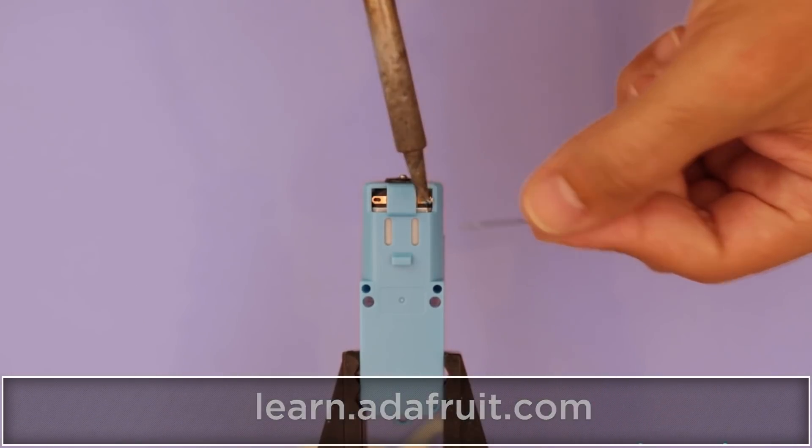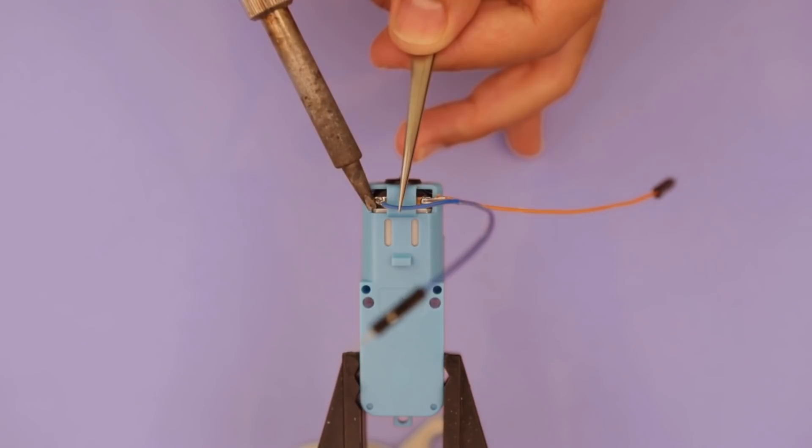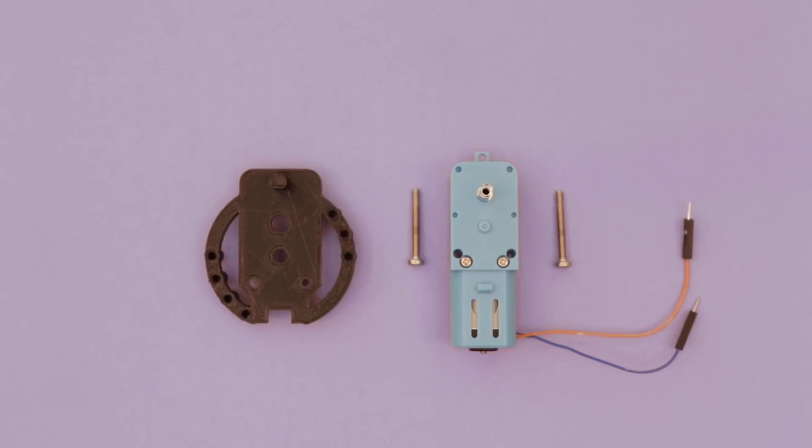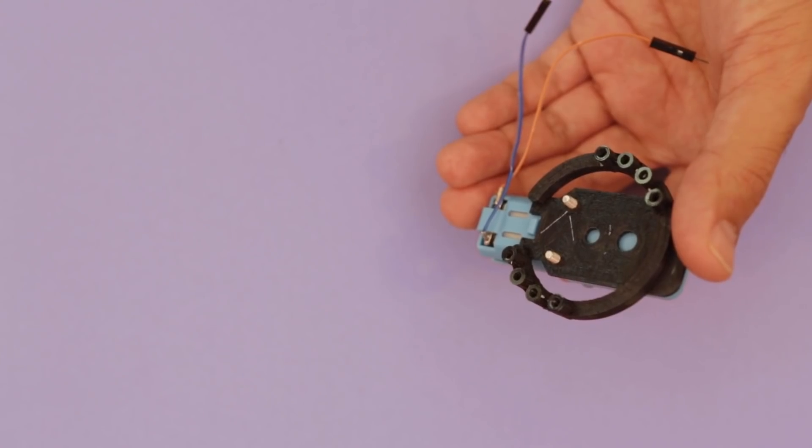This motor has enough torque to drive the ball bearings off the tracks. You can use jumper wires to easily connect it to the Adafruit Cricut. The motor is attached to a 3D printed mount with machine screws.